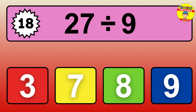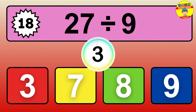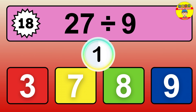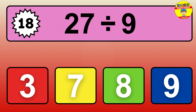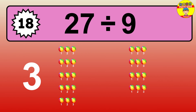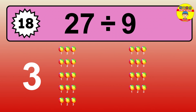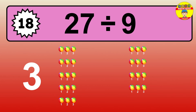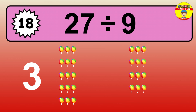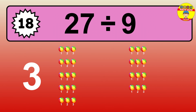27 divided by 9 is… time to think. Let's go to the solution. Divide the number 27 by 9. Each group contains 9 units. So, dividing 27 by 9 results in 3 equal groups. Thus, the result is… 27 divided by 9 equals 3.